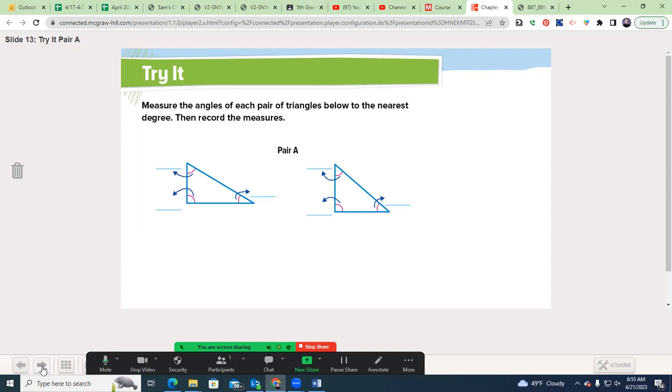Welcome back. Let's see what we found for pair A. 60, 90, and 30, 50, 90, and 40. Notice some key details. If you add these together in a triangle, they will always add up to 180 degrees. If it is not 180 degrees, something went wrong. And because they're 90-degree angles, they are both known as right triangles.